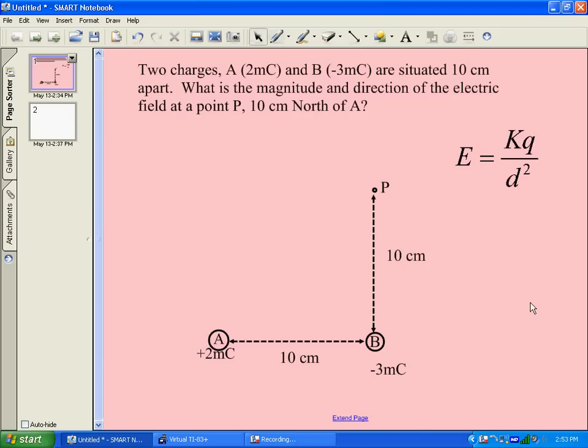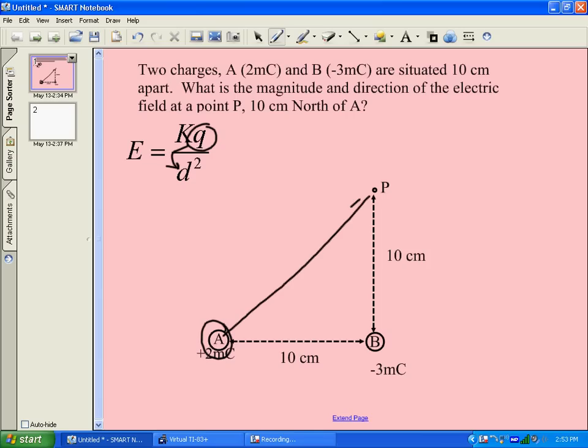Well, our electric field formula can be defined as the electrostatic constant K times the Q that is generating a field, divided by how far you are from that source charge, d squared. So because of A, there's an electric field around A, and at a point P, which is a good distance away, it would be 14.1 centimeters if you were to do Pythagorean theorem with the two tens. So at 14.1 centimeters from A, there's an electric field.